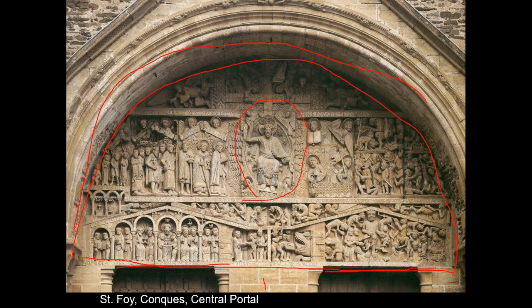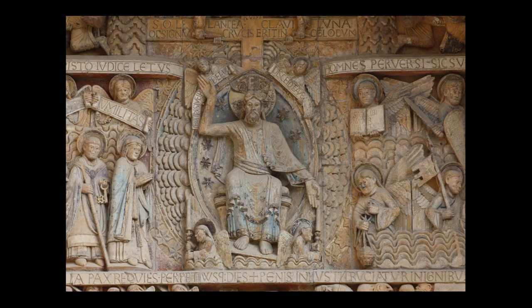The whole tympanum is oriented around Christ, who is the largest figure, dead center, issuing judgment. Some of the original paint is still visible — all medieval sculpture was painted. Christ is in the attitude of judgment in a mandorla, a body halo shaped like an almond, with radiating light in all directions. Angels above hold a cross, angels below hold candlesticks or scrolls. He holds up his right hand in a gesture of blessing and his left hand down in a gesture of condemnation. The blessed are gathered to his right — as the Bible says, sheep on the right and goats on the left — going to eternal life, while those on the left are damned.